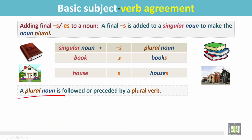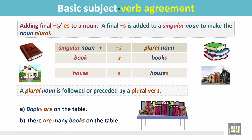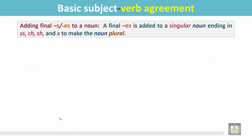A plural noun is followed or preceded by a plural verb. 'Books' and 'houses' are plural nouns. For example: 'Books are on the table' — 'books' is a plural noun followed by the plural verb 'are.' We can also say: 'There are many books on the table,' where the plural noun is preceded by the plural verb 'are.'